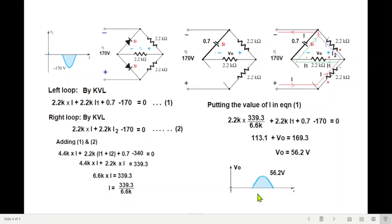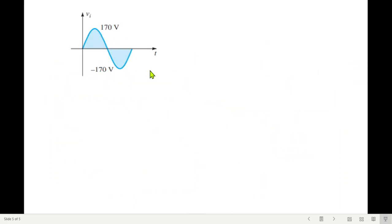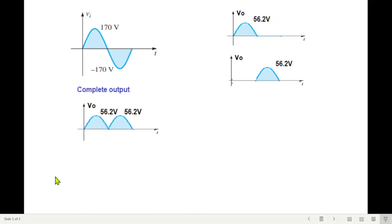So we'll draw it now like this. For the second half, the output will be positive 56.2V. So for the input, 170 minus 170, we are getting two outputs. First half cycle and this second half cycle. So adding the two, we'll get the total output. So this is the complete output.